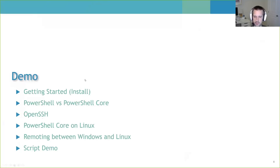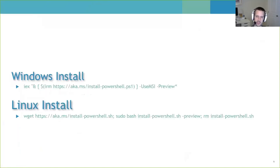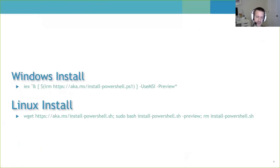Here's the install method I use on all my boxes except macOS, which I had to install manually through brew. These one-liners pull down the script and package and install it. Adding the dash-preview flag installs PowerShell 7; leaving it off installs PowerShell 6.2. There are other flags available—check the links for which parameters you can pass.